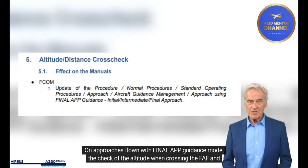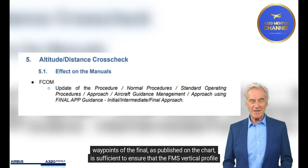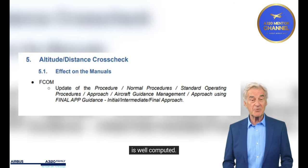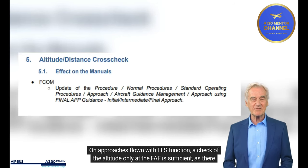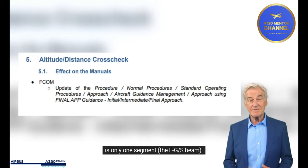On approaches flown with Final App Guidance Mode, the check of the altitude when crossing the FAAF and waypoints of the final, as published on the chart, is sufficient to ensure that the FMS vertical profile is well computed. On approaches flown with FLS function, a check of the altitude only at the FAAF is sufficient, as there is only one segment — the FGS beam.